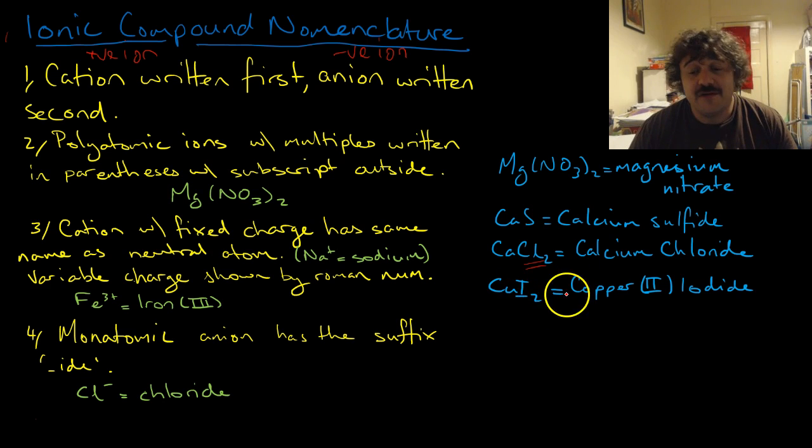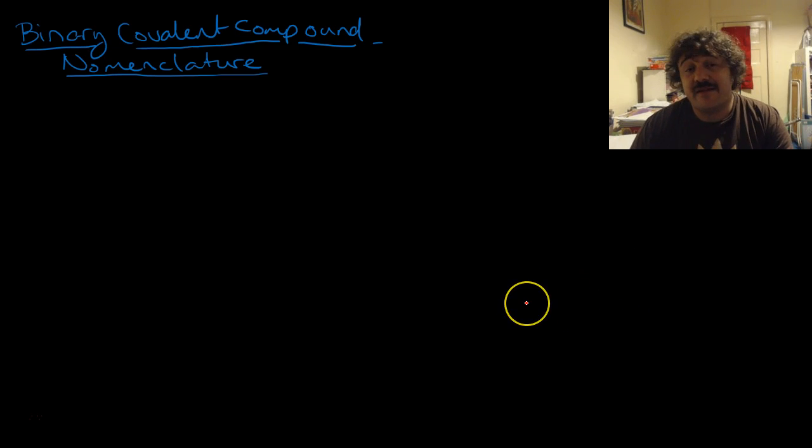Copper is a transition metal, and this one would be Cu 2+, and it is copper iodine, so it's copper 2 iodide. All right, so now let's have a look at how we would name binary, which means there's two of them, covalent compounds. So what's the nomenclature there?